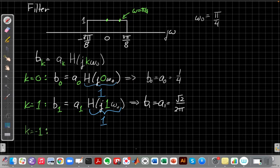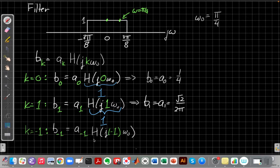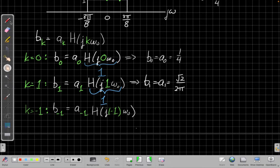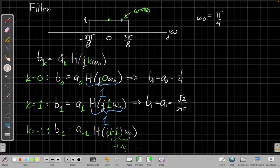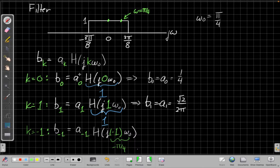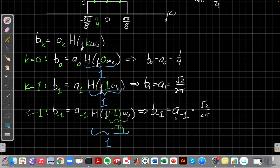So let's do k equals minus 1 next. Replacing all the k's by minus 1, I'll get b of minus 1 equals a of minus 1 times h of j minus 1 times omega naught. So that minus 1 times omega naught, in this case, I'll put in my omega naught as pi over 4. And this term here is evaluating this at minus pi over 4. And when I come up to my graph and do that, I'll be right here. This point here is at minus pi over 4. So again, it's still inside the passband as I expected. So the gain there is reading off the graph. This value here is 1, so I replace this h by its value, which is 1. So b of minus 1 is also a of minus 1, which is root 2 over 2 pi that I had found earlier.